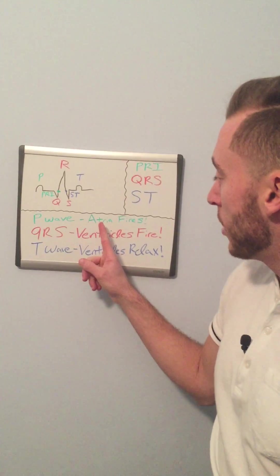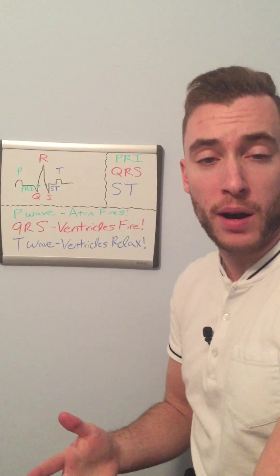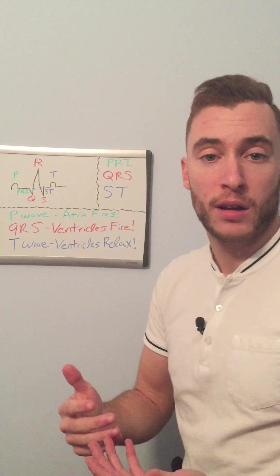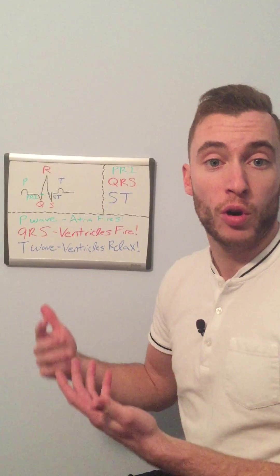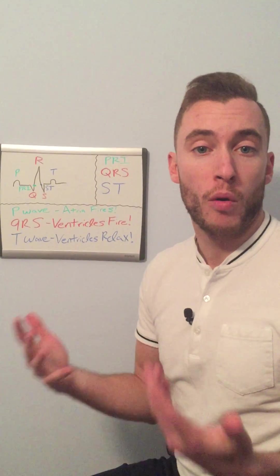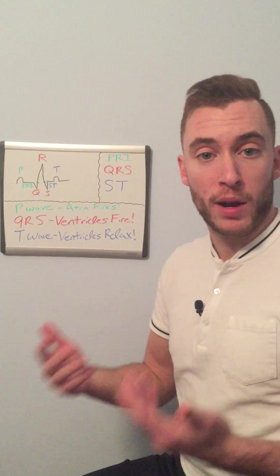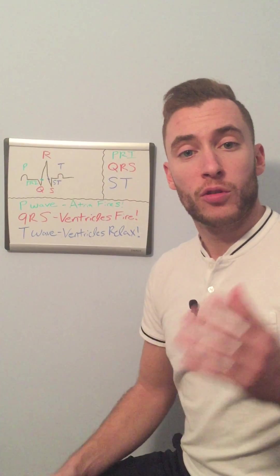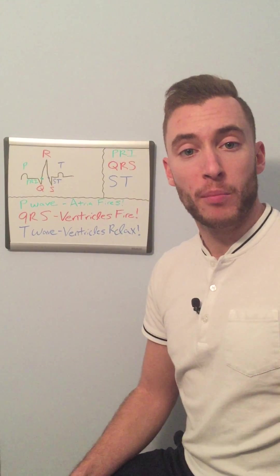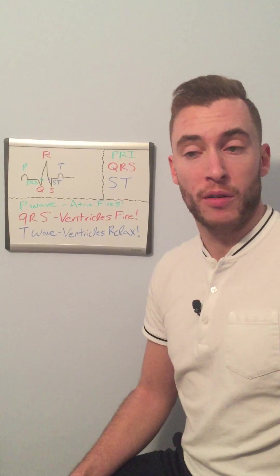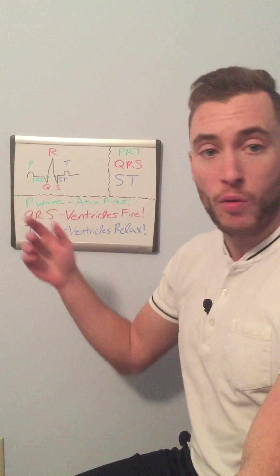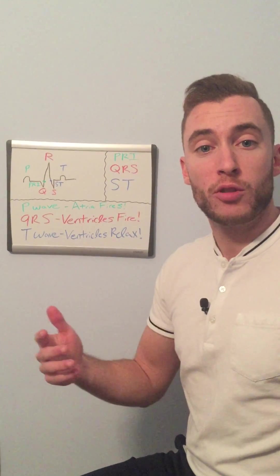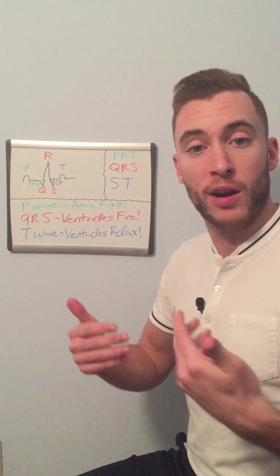The P wave is when the atria fires. What do I mean by the atria firing? In medicine, when I say the word 'fires' or 'goes off,' it means it depolarizes. The heartbeat starts up in the atria and works its way down in the ventricles. So when the atria fires, that impulse gets started right in the atria. The P wave represents the atria firing and starting that heartbeat.